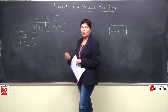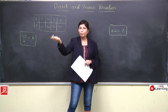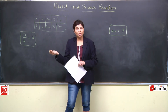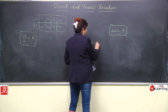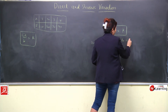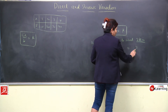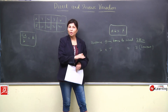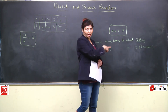Ab hum example lete hain. In the previous example for direct variation, we took distance from home to school — let's say 3 km. Ab hum time aur speed ki baat karte hain. Formula hai: speed into time is equal to distance, jo fix ho gaya — 3 km — so distance is constant in this particular question. Ab mujhe speed aur time ko arrange karna hai.